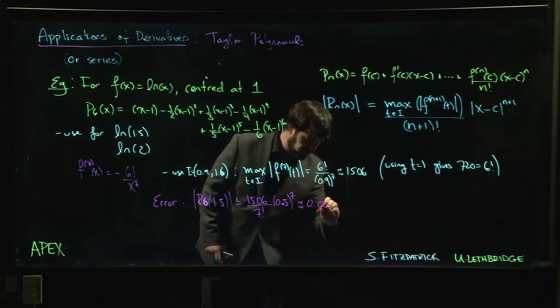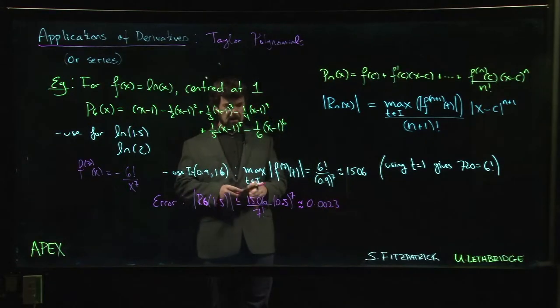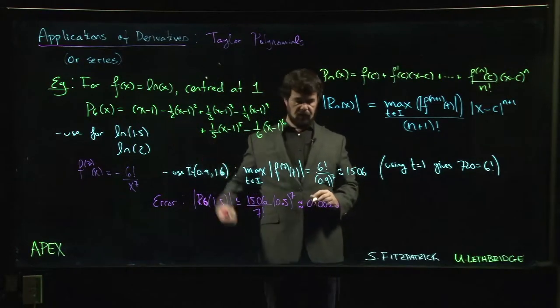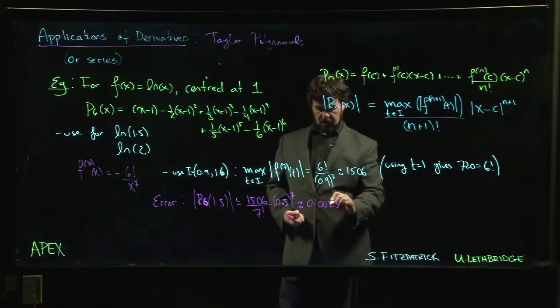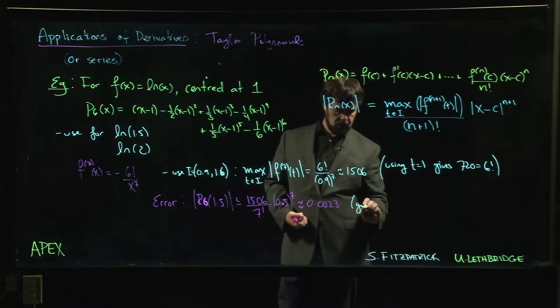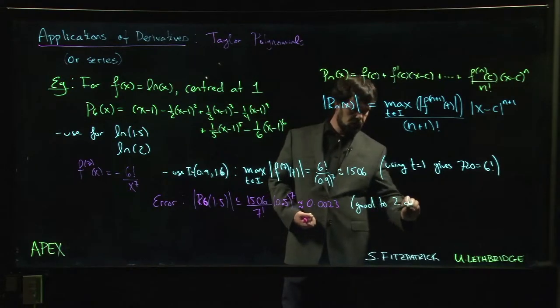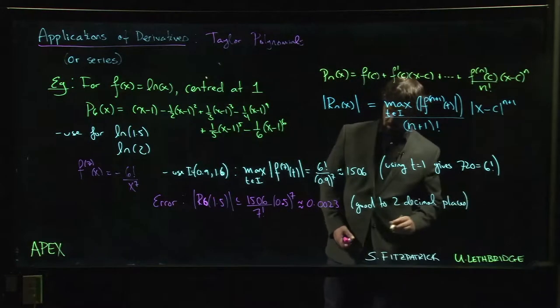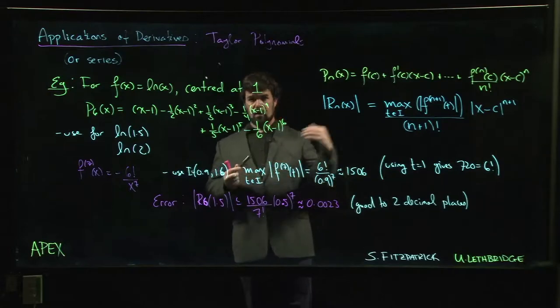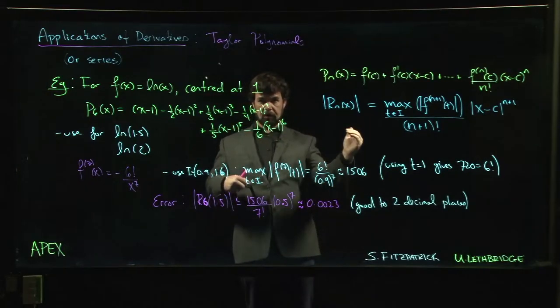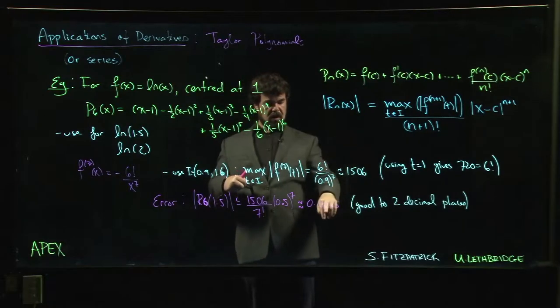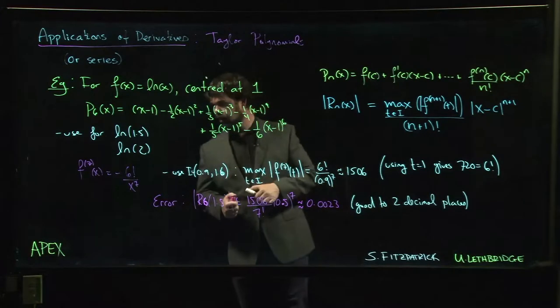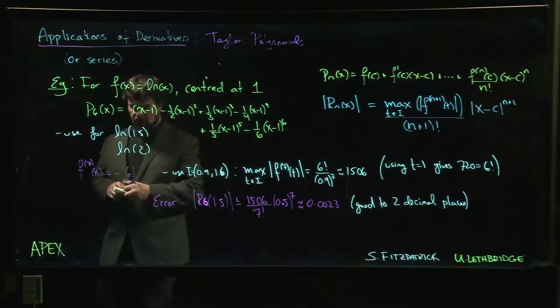So if you punch this through, you get that this is something like 0.0023. And so what that tells you is that the estimate you get for the natural log of 1.5—because the error is less than 5 in this spot—you know that you're good to two decimal places. Because whatever value you got, you get up to the second decimal place, and in the third decimal place you're off by plus or minus 0.2 up to rounding. That's not enough to shift what you've got in the second decimal place, so you're fairly happy with that.